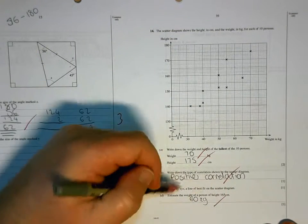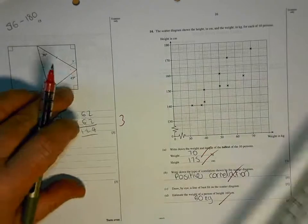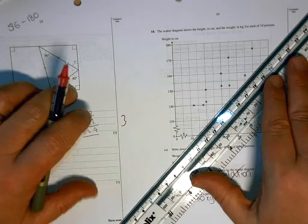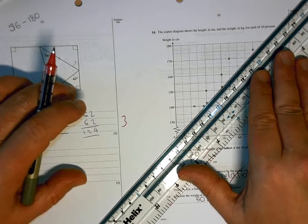Those are all right. Why haven't you drawn your line of best fit? Okay, so your line of best fit needs to be a similar slope to the points that you've got there.